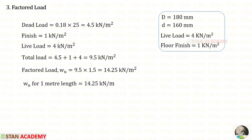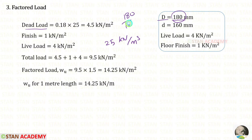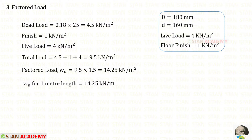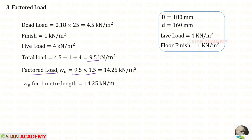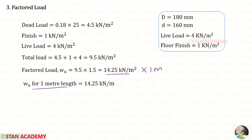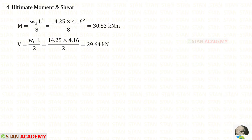Now we are going to find the factored load. To find the dead load we multiply the overall depth D by the unit weight of concrete 25 kilo Newton per meter cube. Converting 180 millimeter to meter gives 0.18, so the dead load is 4.5 kilo Newton per meter square. Adding the live load and floor finish, the total load is 9.5 kilo Newton per meter square. Multiplying by the load factor 1.5 gives the factored load of 14.25 kilo Newton per meter square. For 1 meter length, the factored load is 14.25 kilo Newton per meter.